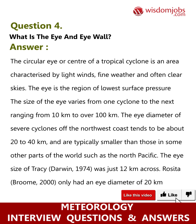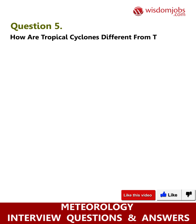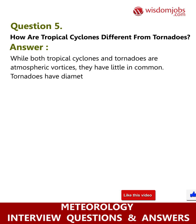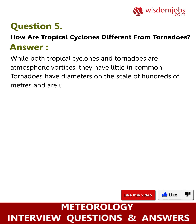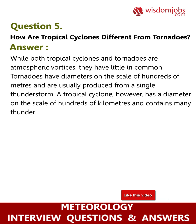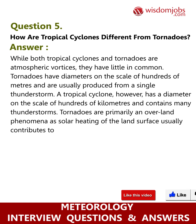Question 5: How are tropical cyclones different from tornadoes? While both tropical cyclones and tornadoes are atmospheric vortices, they have little in common. Tornadoes have diameters on the scale of hundreds of meters and are usually produced from a single thunderstorm. A tropical cyclone, however, has a diameter on the scale of hundreds of kilometers and contains many thunderstorms.